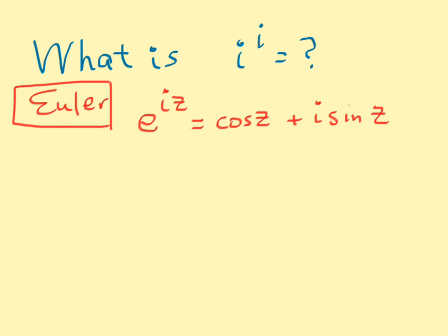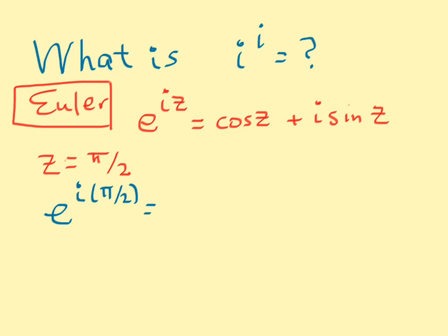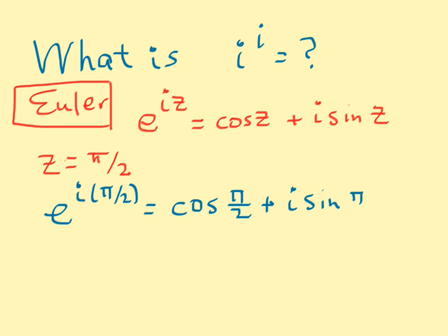We're going to consider what happens when z is equal to π/2. Substituting, we get e raised to the exponent i times π/2 — actually, it will be equal to cos of π/2 plus i times the sine of π/2.